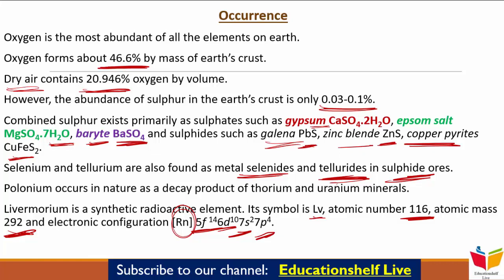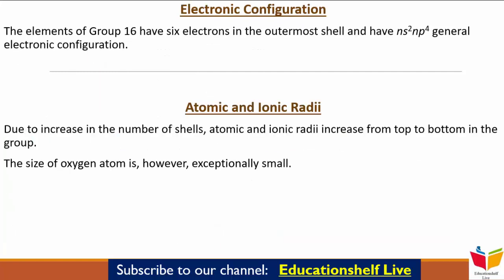अब चलते हैं इन elements के next characteristic पे, जो की है Electronic Configuration। Group 16 के जितने भी elements हैं, उनके outermost shell में 6 electrons होते हैं, और उनका जो General Electronic Configuration है, वो है ns2, np4।